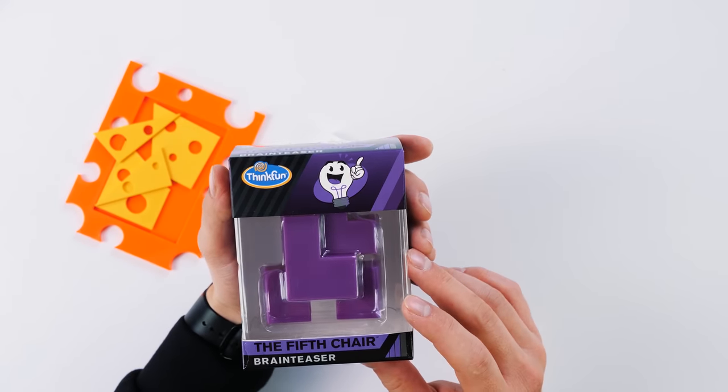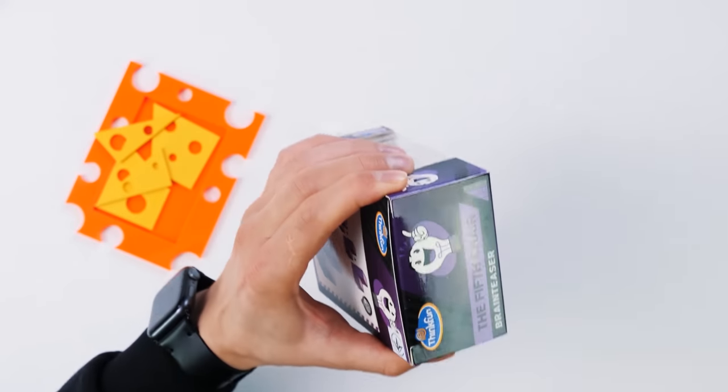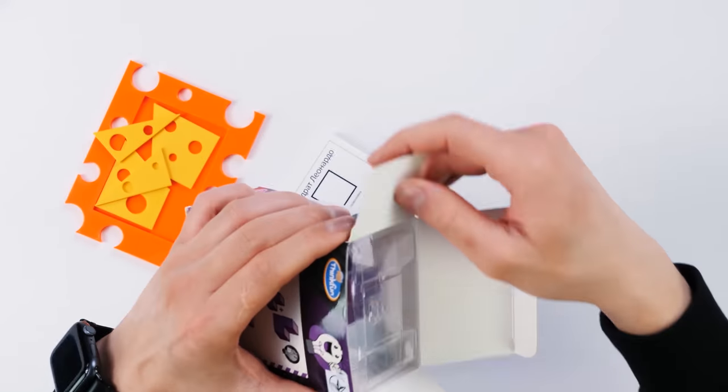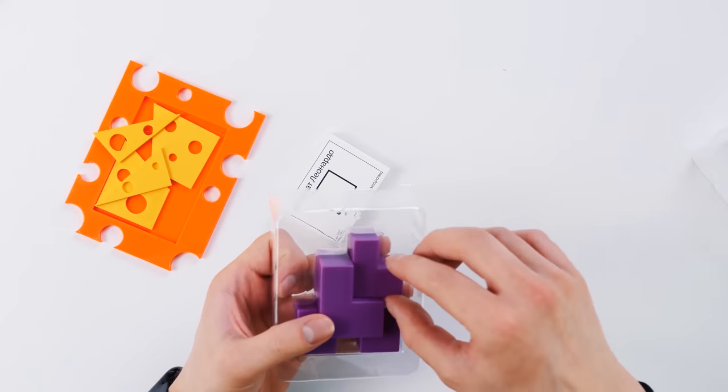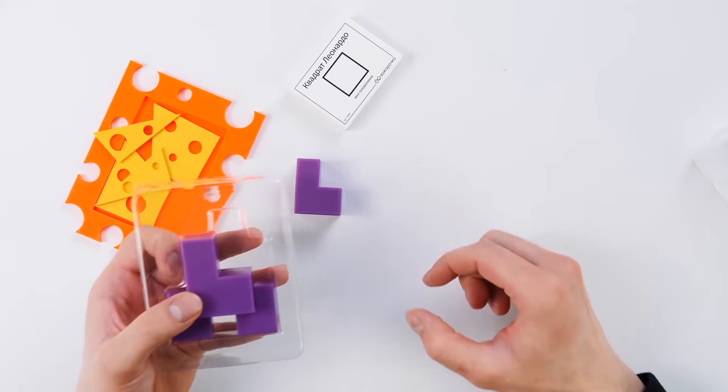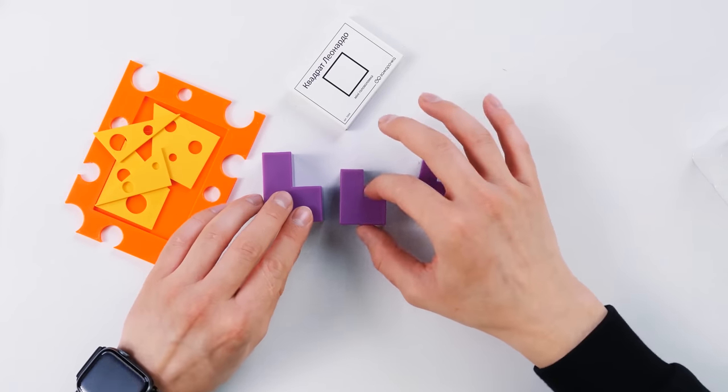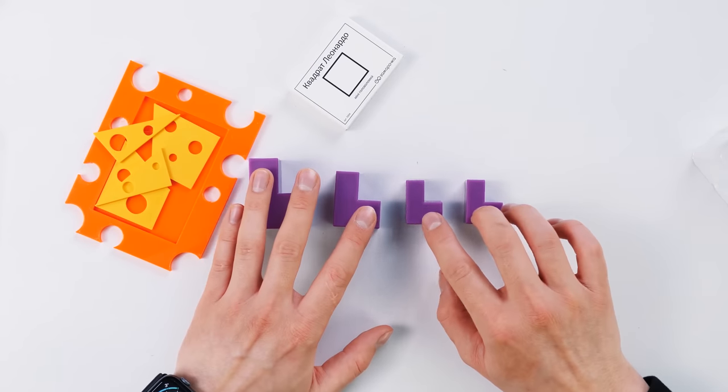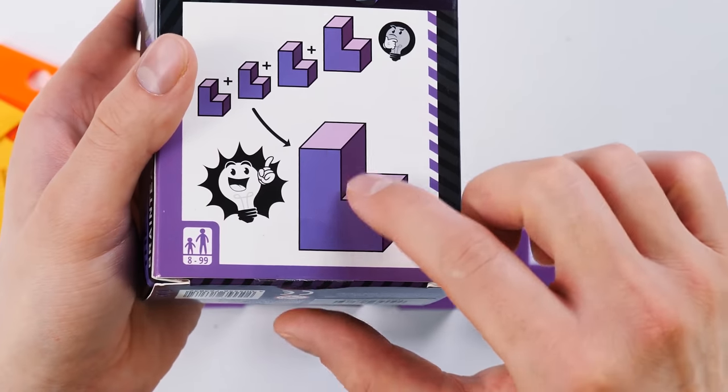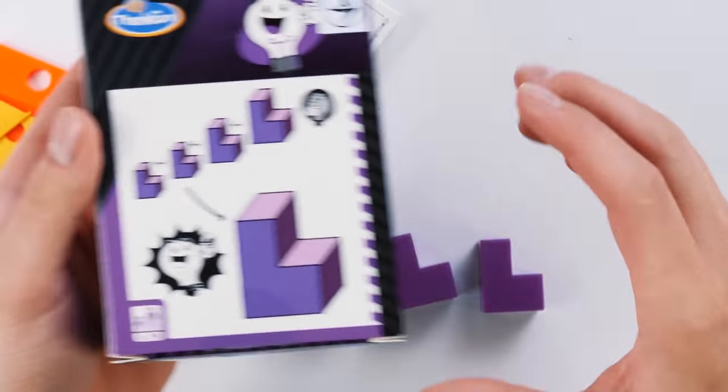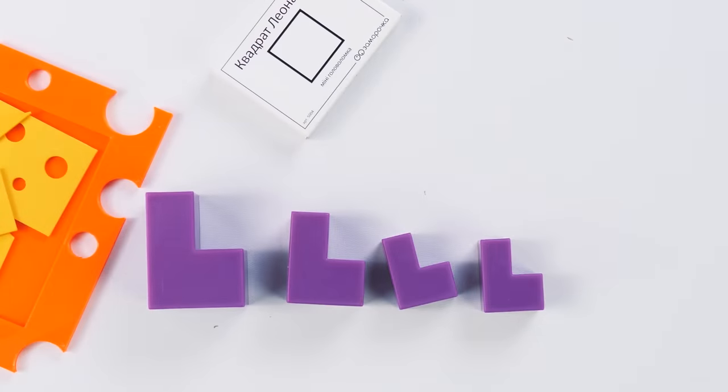The first one is this puzzle called the Fifth Chair. It looks really interesting. And the task is to use these four chairs. I understand it, we will consider these corners to be chairs. One, two, three, four. They are all of different sizes, and our task is to build one similar chair, but large. So what we have to do is we have to put these four pieces together into another big one. And that's the fifth chair.